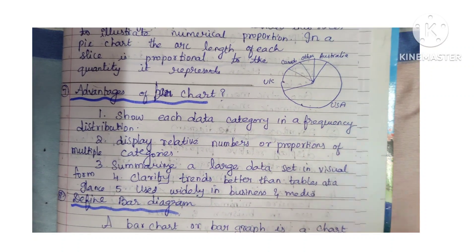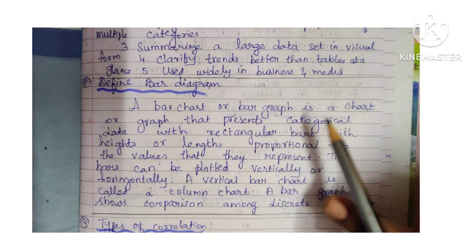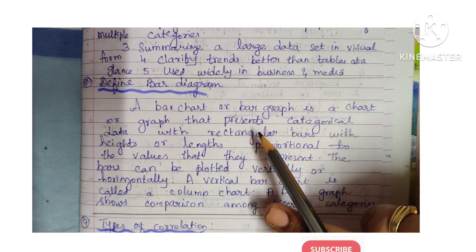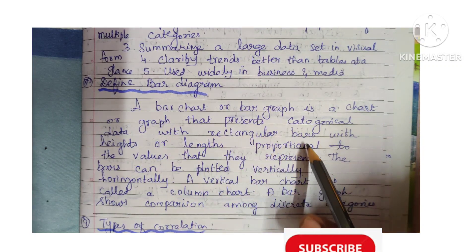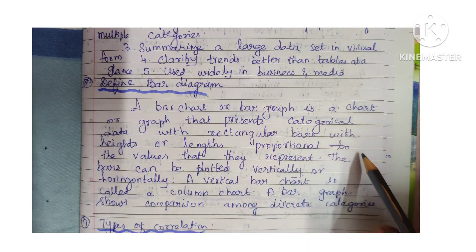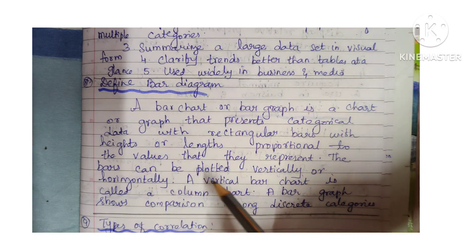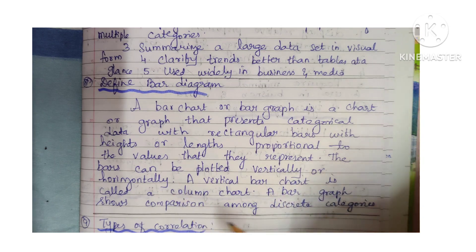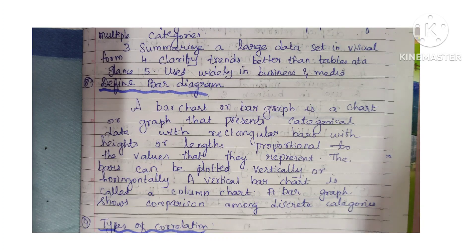Next is define bar diagram. A bar chart or bar graph is a chart or graph that presents categorical data with rectangular bars with height or length proportional to the values they represent. The bars can be plotted vertically or horizontally. A vertical bar chart is called a column chart. A bar graph shows comparison among discrete categories.